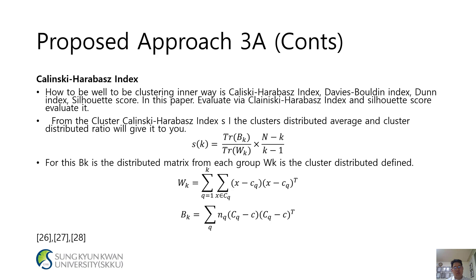Wk is the cluster-distributed defined: Wk = Σ(q=1 to k) Σ(x ∈ Cq) (x - cq)(x - cq)^T. Bk = Σ(q) nq * (cq - c)(cq - c)^T.